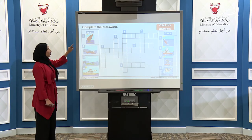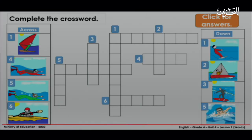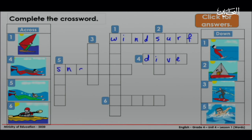Now let's start with number one across. Do you remember what it is? Very good! It's windsurf. What about number four? What did you write on your mini board? Excellent, it's dive. What about number five? What did you write? Perfect, it's snorkel. And what about number six? Can you remember it? Well done, it's kayak.